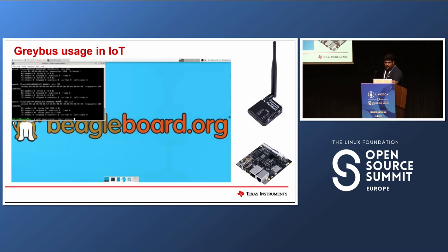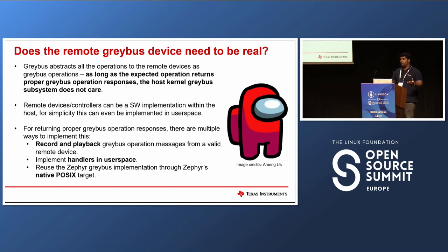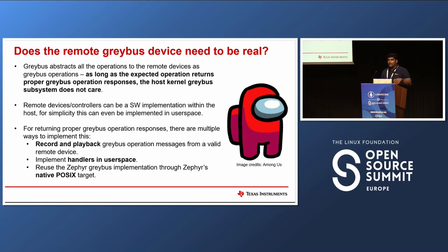Greybus converts all operations on the host to Greybus operation messages, and the remote node performs these operations. From a kernel Greybus perspective, there need not be an actual physical device. If some entity responds back with the proper Greybus response to a GPIO get value request, the Linux kernel Greybus subsystem will think there is an actual Greybus device. So we can emulate this as a software entity within the host device itself.